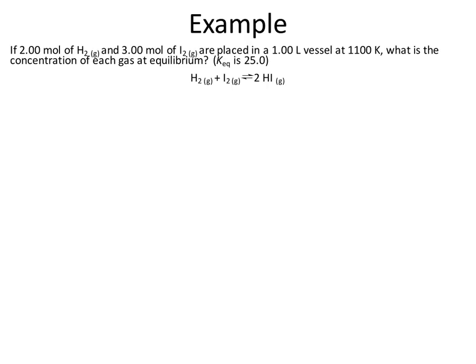In this problem, we have 2.00 moles of H₂ and 3.00 moles of I₂ placed in a 1-liter vessel at 1100 Kelvin. We're asked for the concentration of each gas at equilibrium if Keq is equal to 25. That's a large Keq, which means products are going to be heavily favored in this reaction.